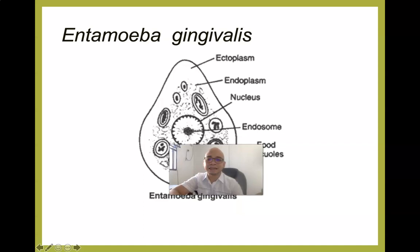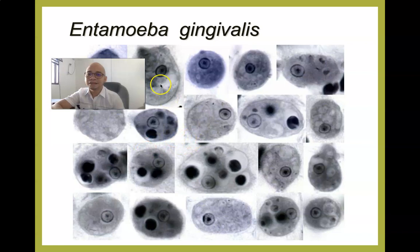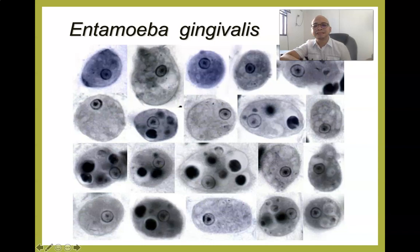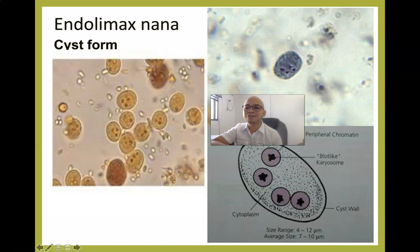The presence of Entamoeba gingivalis in the oral cavity is indicative of poor oral hygiene. The trophozoite has blunt pseudopodia, food vacuoles containing cellular debris, and endosomes at the center of the nucleus. Staining with iodine or methylene blue allows better observation of nuclear content and endoplasm.